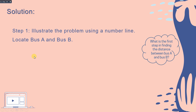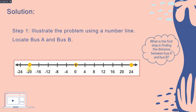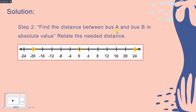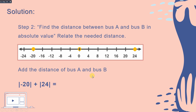After illustrating on the number line with negative 20 and positive 24, we find the distance of bus A and bus B using absolute values. We add the distances: the absolute value of negative 20 plus the absolute value of 24. Getting the absolute values gives us 20 plus 24, which equals 44. So the total distance between bus A and bus B is 44 km.